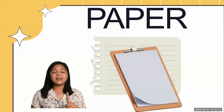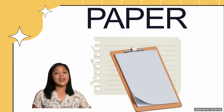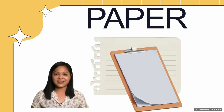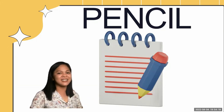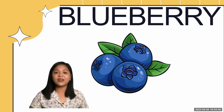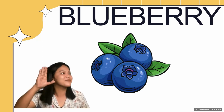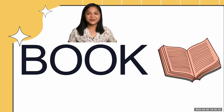Things that we see have names too. One example is this one — what is this? Yes! It is a paper. It is where we write our assignments and lessons. We have another one, and it is a pencil. That's right! A pencil. Blueberry is another example of a noun. Can you say blueberry? All right! A book is also an example of a noun — a thing in particular.